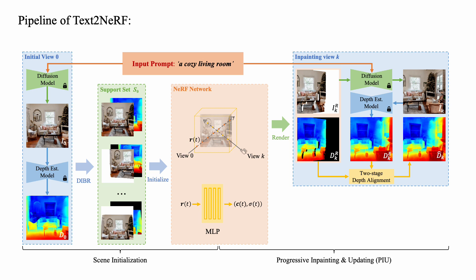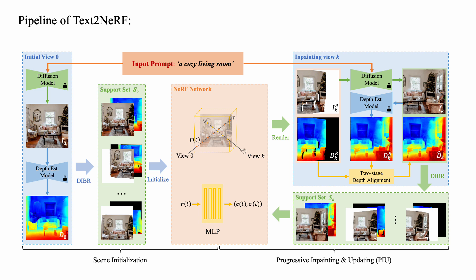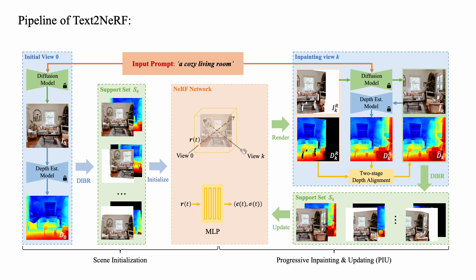Finally, the inpainted image and its aligned depths are used to construct the support set SK, and further update the 3D radiance field. We then render the updated radiance field in a novel view K+1, and update the radiance field with the new inpainted results.